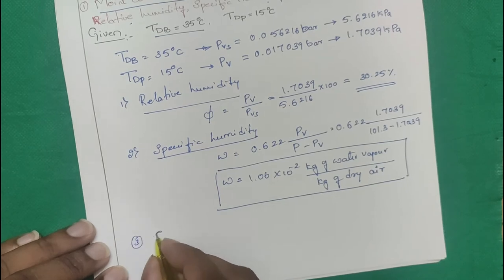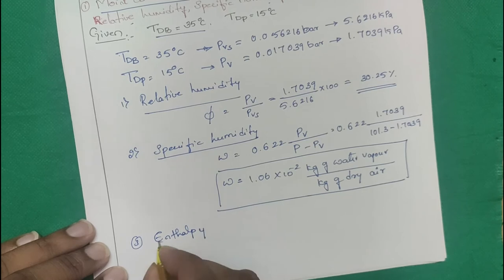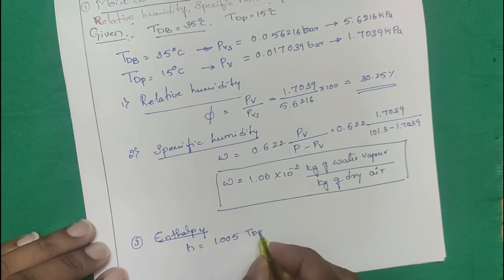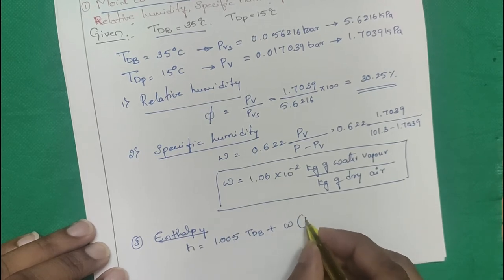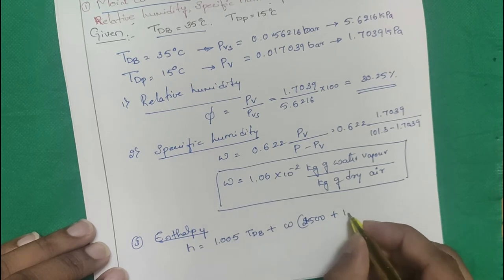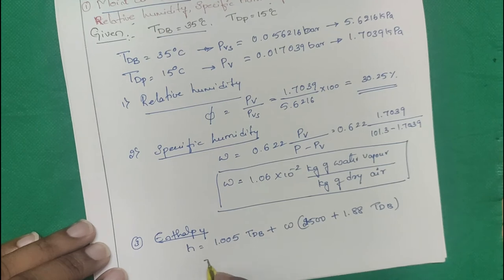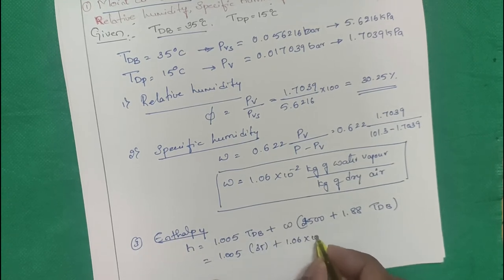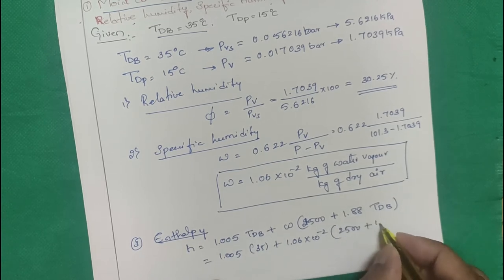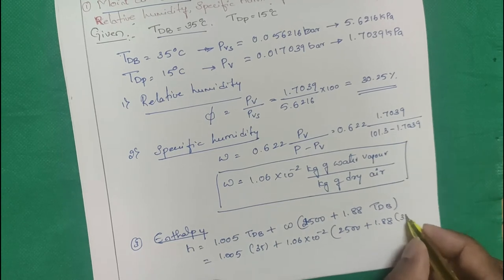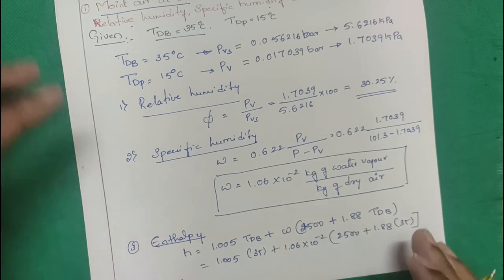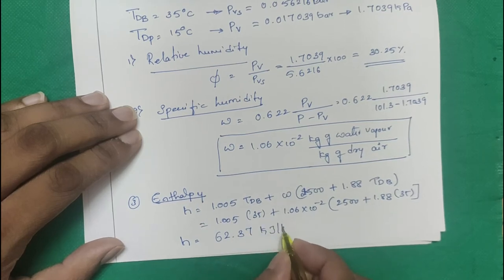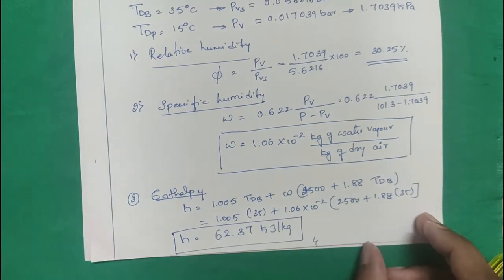Step 3 — Enthalpy: h = 1.005 × Tdb + W × (2500 + 1.88 × Tdb). Substituting Tdb = 35°C and W = 1.06 × 10⁻²: h = 1.005 × 35 + 0.0106 × (2500 + 1.88 × 35) = 62.37 kJ/kg. This completes Problem 1.